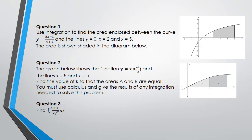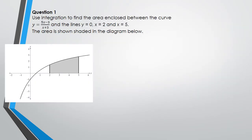All right, let's get started. First question: we've got the curve y equals (5x minus 3) over (x plus 3) and we're trying to find the shaded region — the area between x = 2 and x = 5. Now if you remember from last week with integration of rational functions, we need to write this in quotient and remainder format. So I'm going to use long division on the side here.